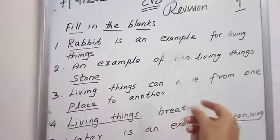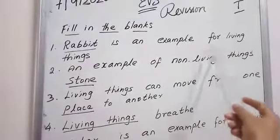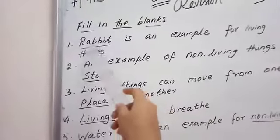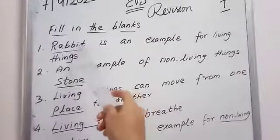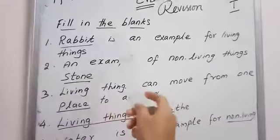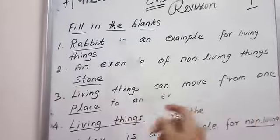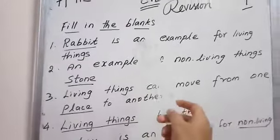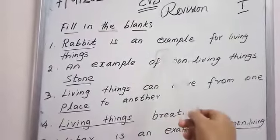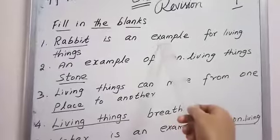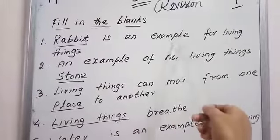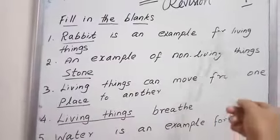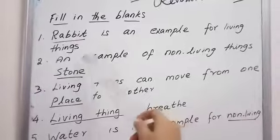Rabbit is an example of living things. R-A-B-B-I-T. Rabbit is an example of living things. Living things can grow, they can breathe, and they can move from one place to another. So rabbit is an example of living things.